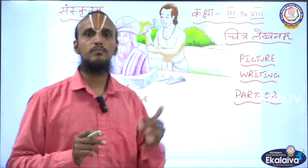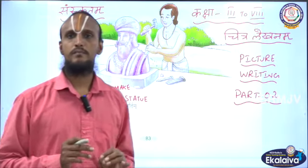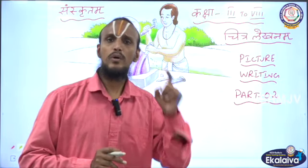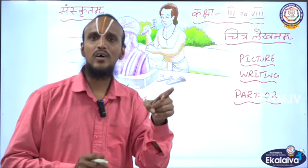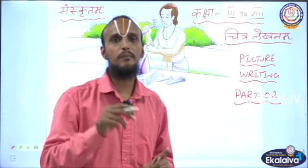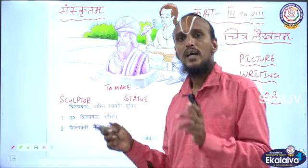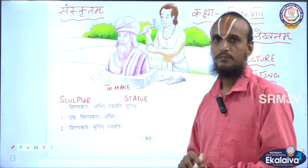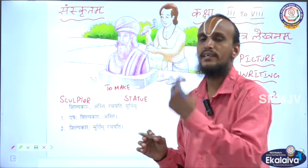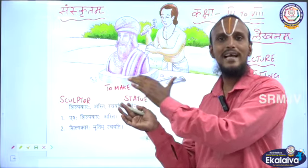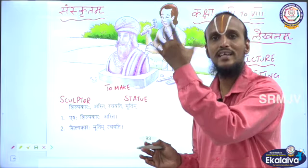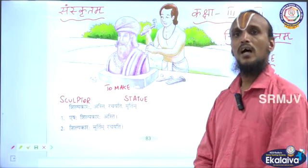Listen here. In your question paper, they will give you a picture. They will also give you a clue box. What you have to do is see the picture, understand the context, and understand what is happening in that picture. Then you have to see the Manjusha, the clue box, understand the words and their meanings. Then you have to frame two sentences. For lower classes, two sentences; for higher classes, five or ten sentences.